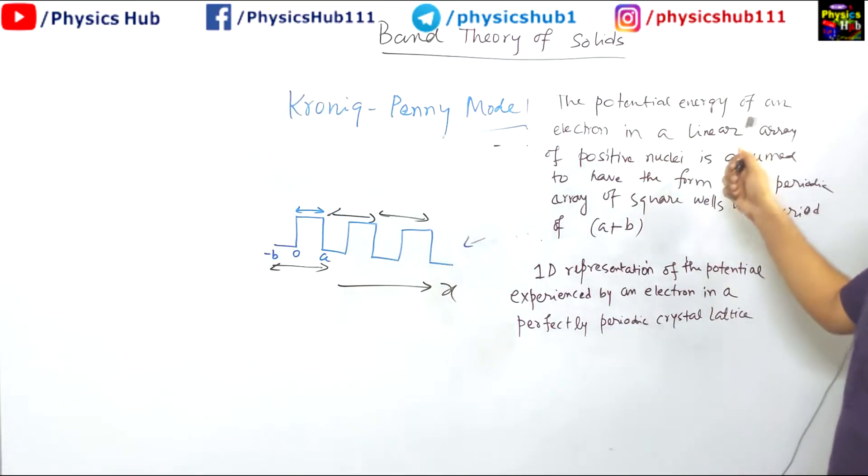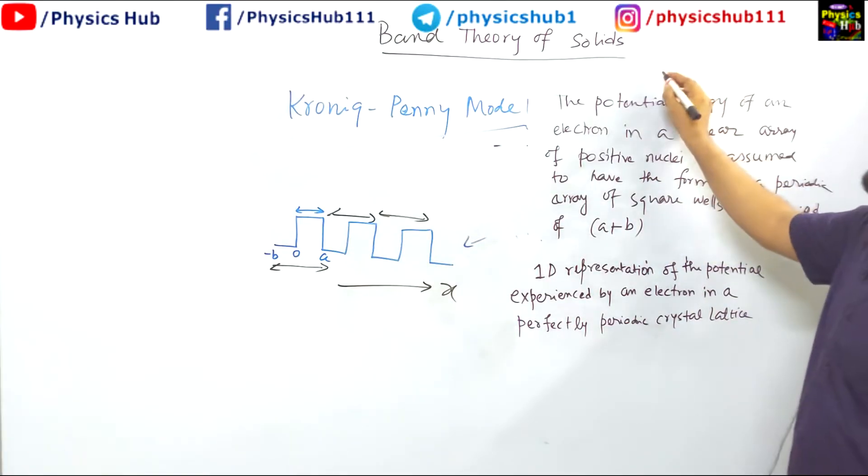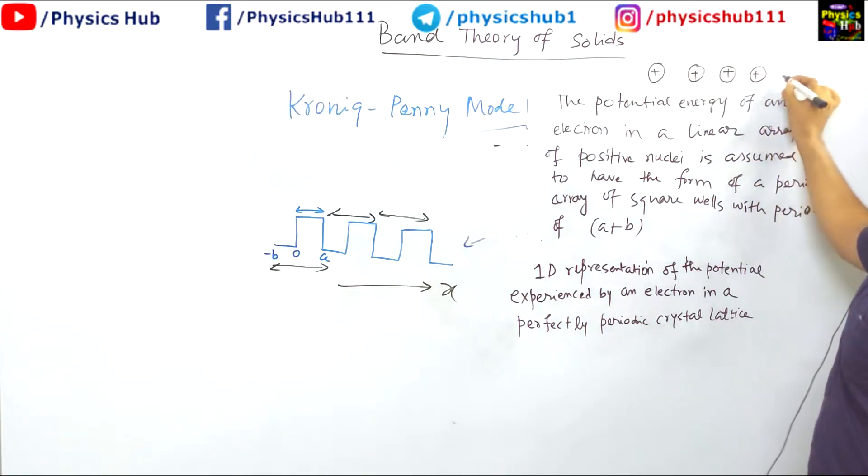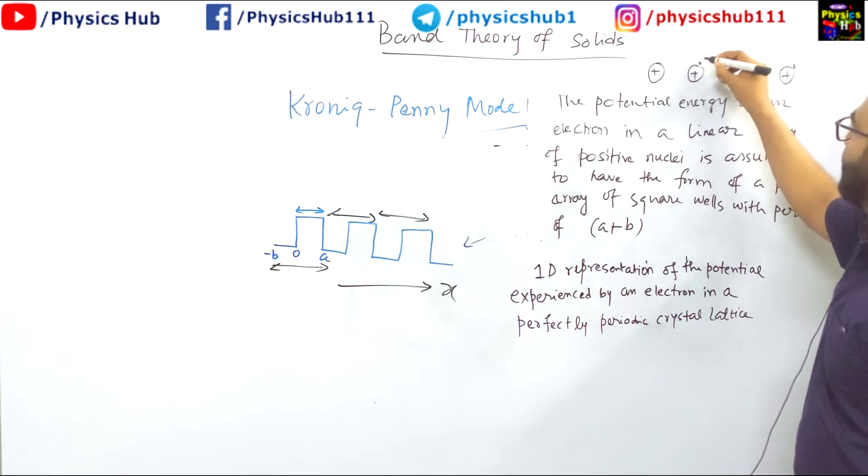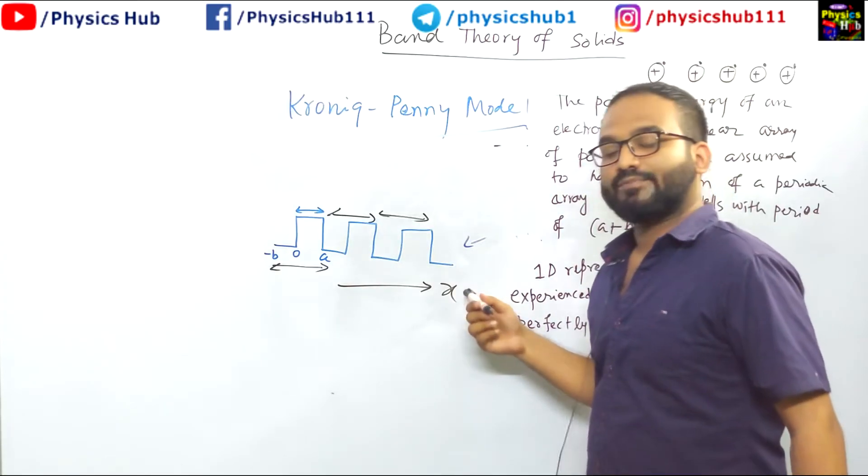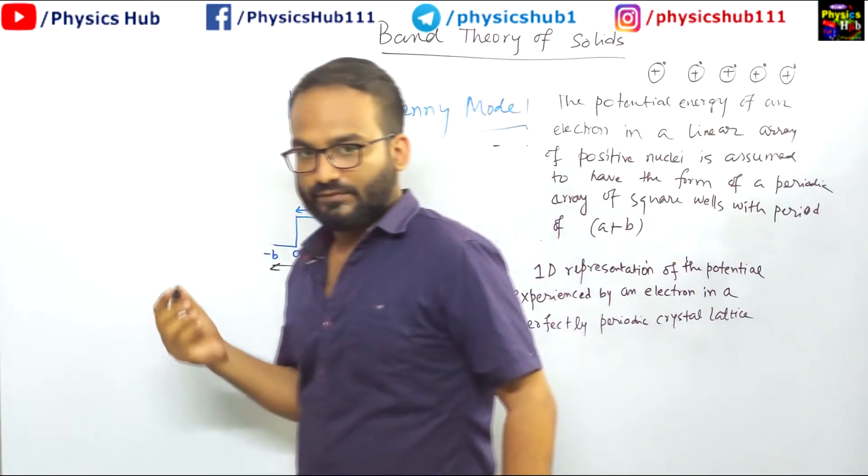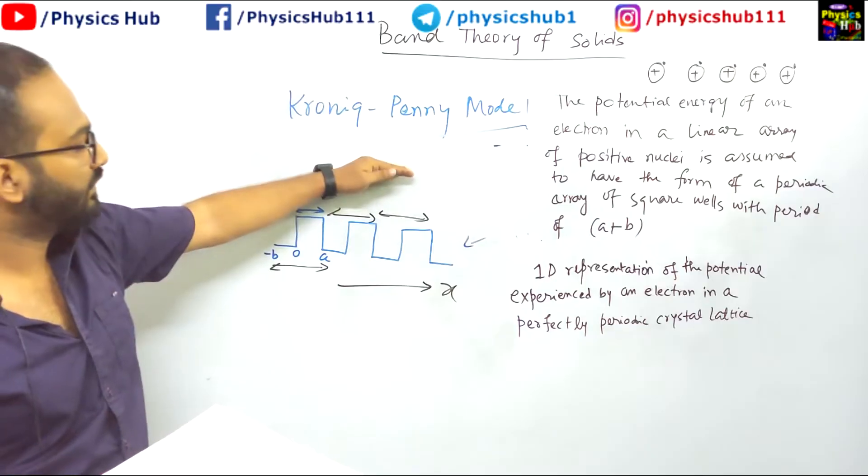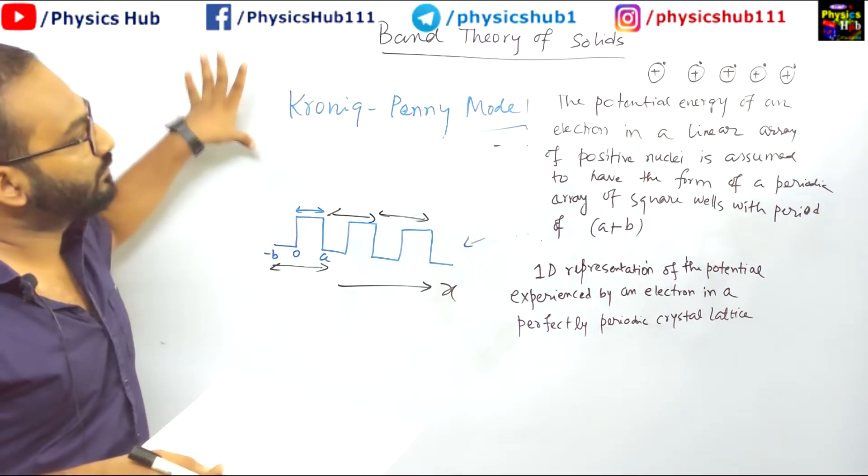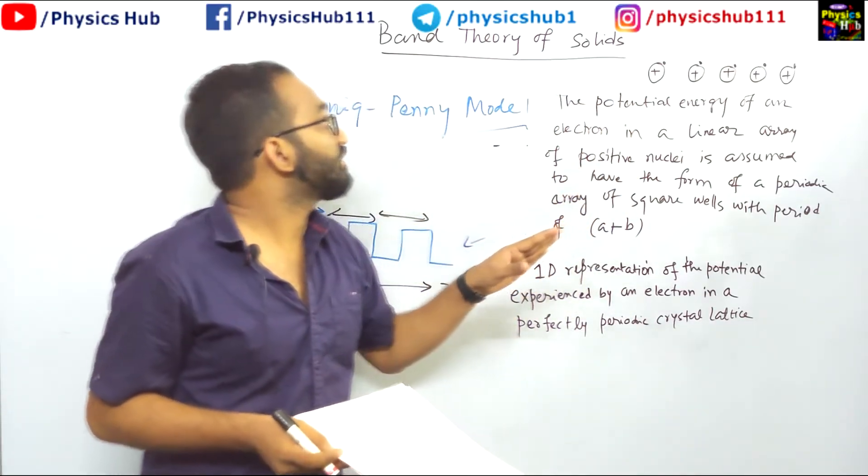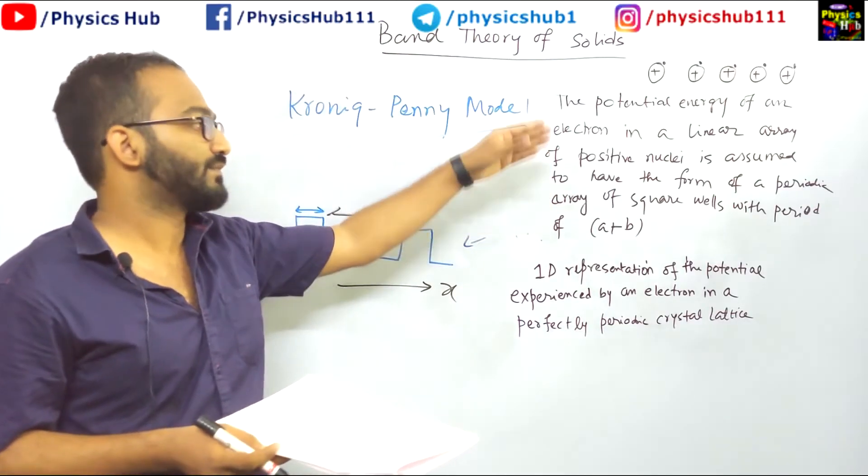I hope you understand the potential energy of an electron in a linear array of positive nuclei. So we have considered this. This is the positive ion core, and one electron approximation we have taken. So one electron is associated to each ion like this. And for that we have drawn this simplified, very simplified periodic potential. The only problem with free electron gas theory was it considered constant or zero potential, but here we have taken the periodic potential. Now we will see how this potential leads us to the concept of bands in semiconductors and in insulators.